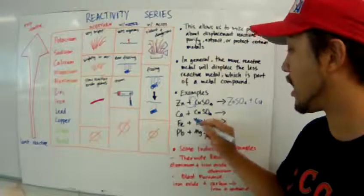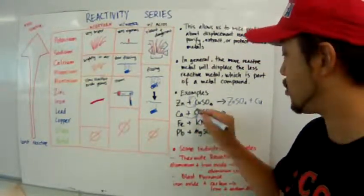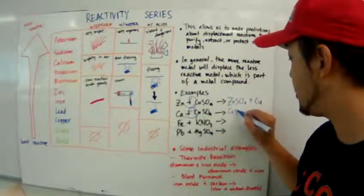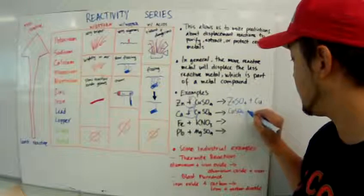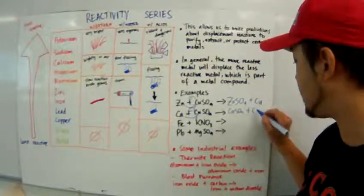when you put the two together, you will need to displace copper? Yes, it will. Copper will get displaced. What you have is calcium sulfate, plus copper.